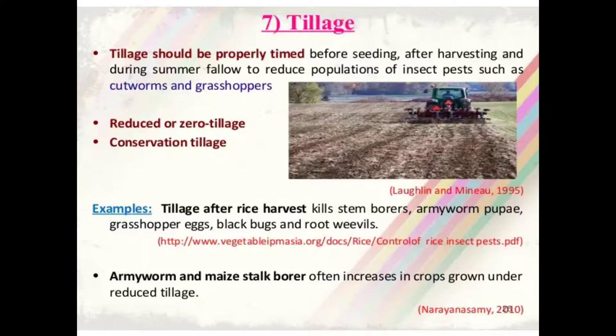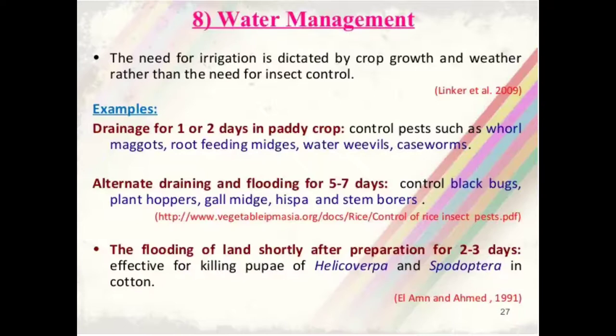The next management practice is water management. The need for irrigation is determined by crop growth and weather rather than insect control needs. For example, drainage for one to two days in paddy crop controls pests such as whorl maggot, root-feeding insects, water weevils and case worm. Alternate draining and flooding for five to seven days controls black bugs, plant hoppers, gall midge and stem borers. Flooding of land shortly after preparation for two to three days is effective for killing pupae of Helicoverpa and Spodoptera in cotton.